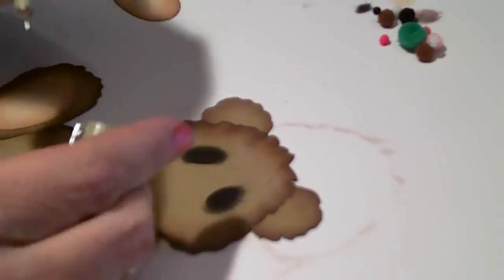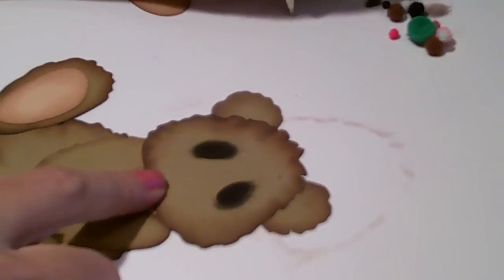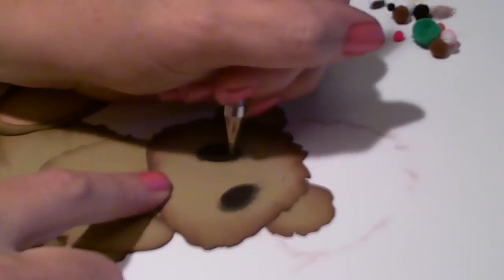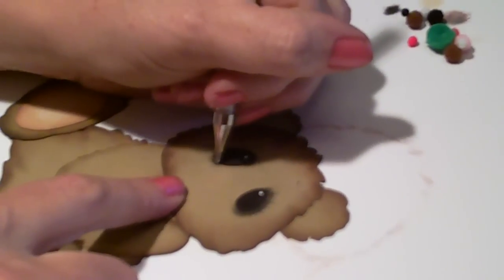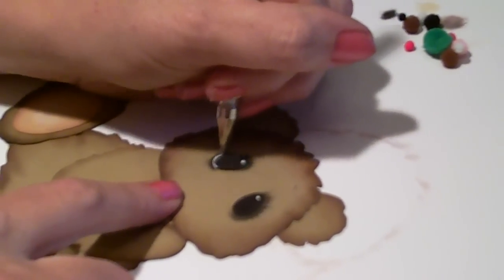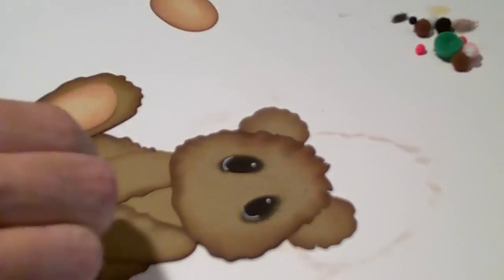A couple eyebrows, come in with the white pen, add your dot, another dot, and then a little arched line at the bottom of each eye.